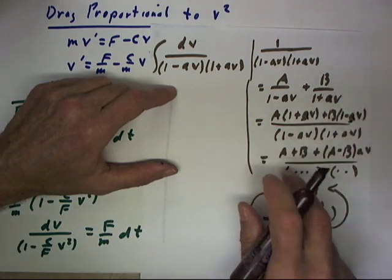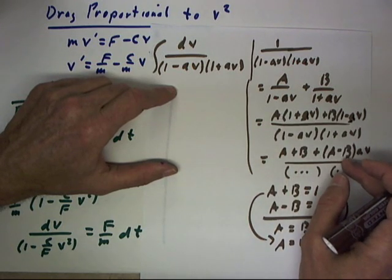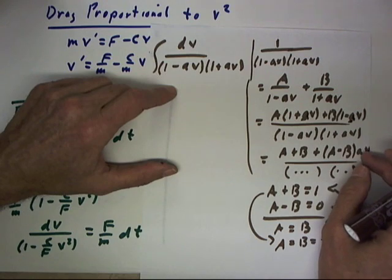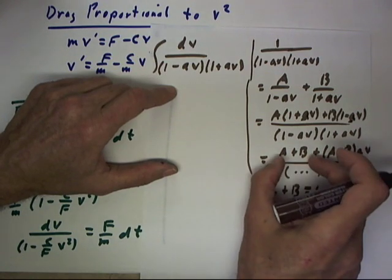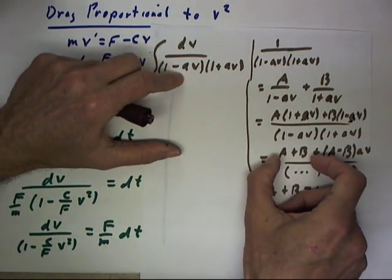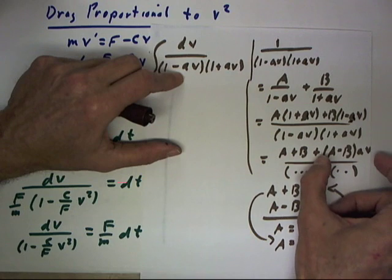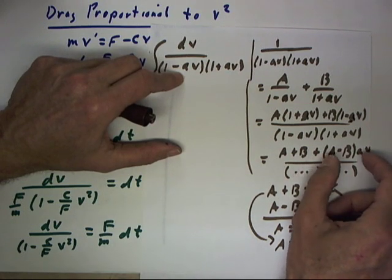This can be rearranged so that we have the A plus B term here and the A minus B term times little a times the v term here. It's important to break it up in this manner because this breaks the numerator into a constant and another constant multiplied by our variable v.